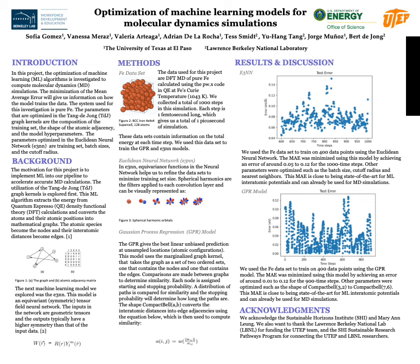Similarly, we plotted the mean average error for the trained data using the GPR model. We used the same size training set, but optimized some other parameters in this model — specifically the alpha, which corresponds to the fitting of the data, and the shape of the adjacency matrix, which is the compact bell shape described earlier. Here we observe a mean average error from around 0.005 to a highest of 0.12, concluding that both models help us achieve our goal of calculating molecular dynamic simulations.